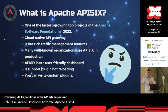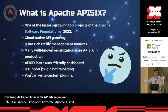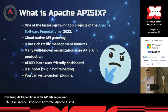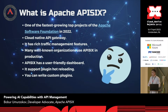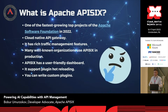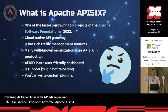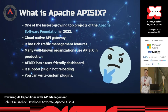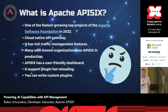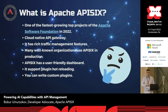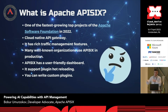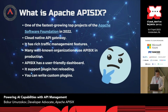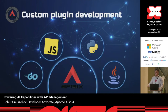APISIX is also one of the top fastest-growing projects of the Apache Software Foundation. Why is it called APISIX? There are actually seven continents in the world, but six in China, as I understand, is a lucky or successful number — that's why it's called APISIX, not the sixth version of API, just a successful number.